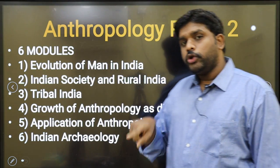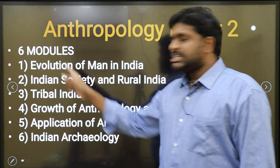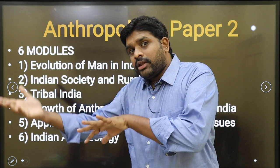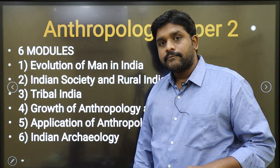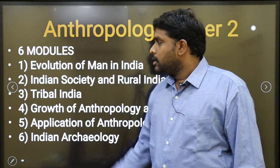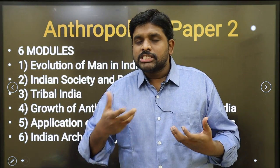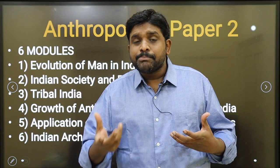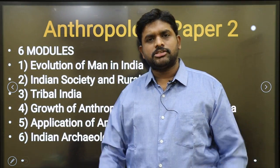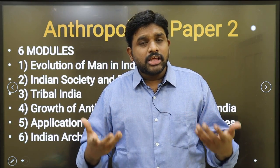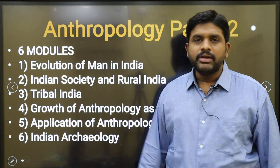In anthropology paper two, as I told you earlier, paper two is called Indian anthropology. Again, we have six modules. Module one: evolution of man in India — how evolution happened specifically in India. Module two: Indian society and rural India — how Indian society evolved, what is village and rural society, how globalization is impacting rural society, and how the Panchayati Raj system is impacting rural society. Module three: tribal India — the problems of tribes, their solutions, and the government steps taken to ameliorate the life of tribes.